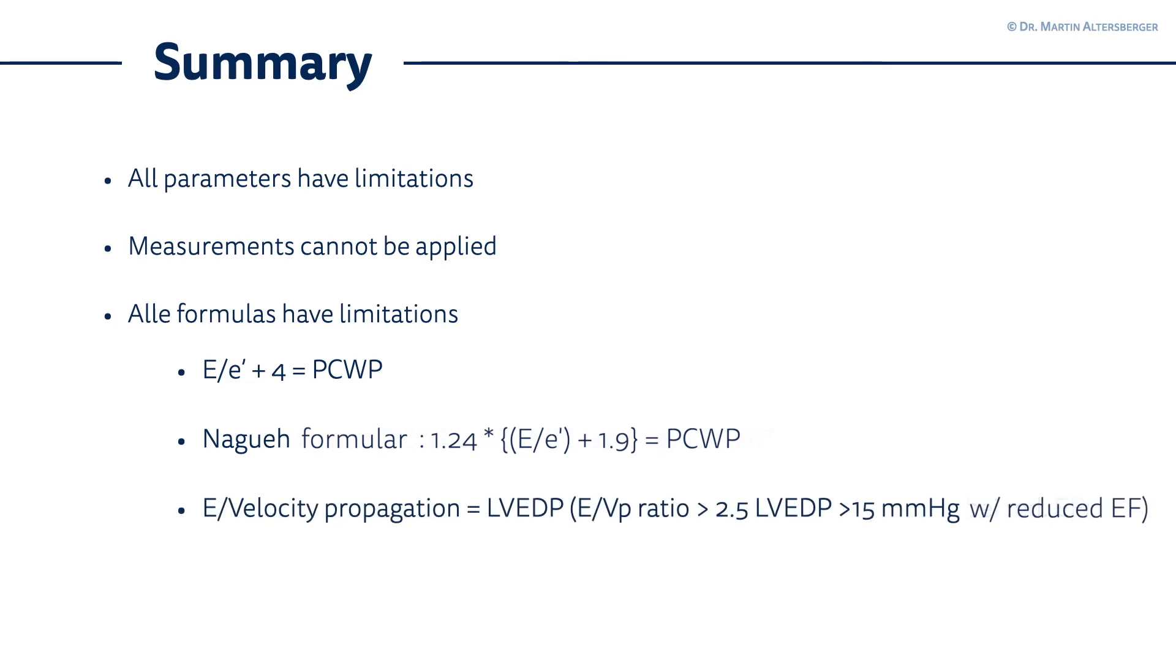Another possible formula is the E divided by the velocity propagation. Then you can calculate the left ventricular end-diastolic pressure. If this E to velocity propagation ratio is above 2.5, the left ventricular end-diastolic pressures are above 15 mmHg in patients with reduced ejection fraction. So, also a measurement with several limitations, and you will see an example of this velocity propagation. It's per se a very complicated measurement to perform.